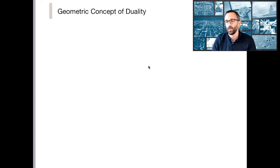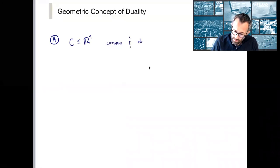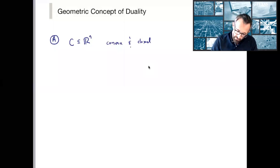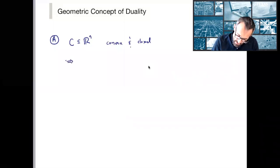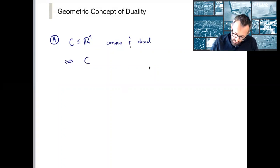This really goes back to one of the basic properties of convex sets. So an important property is that if I have a convex set that is, in addition to being convex, closed, which means it contains all its limit points, then C is also the intersection of all half spaces that contain it, where H here denotes a half space.